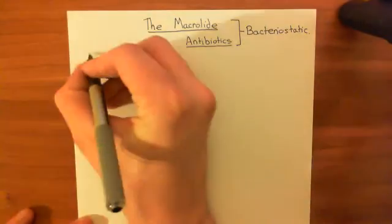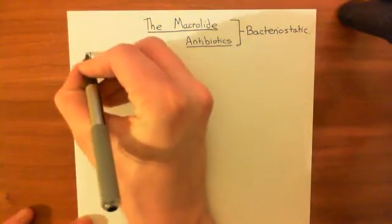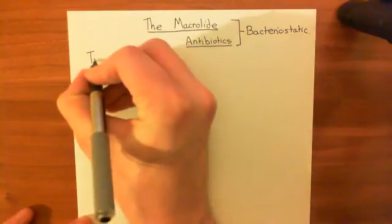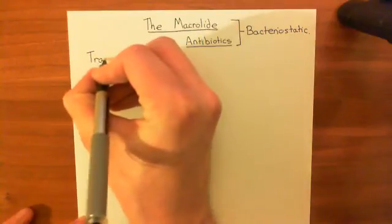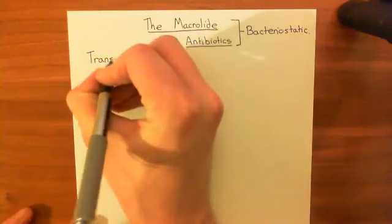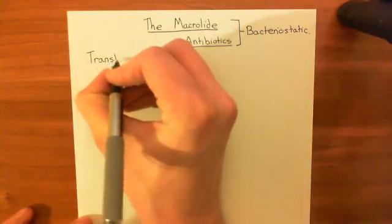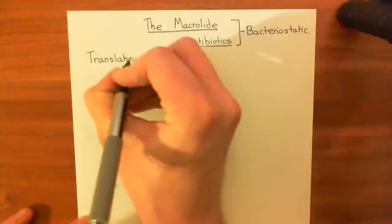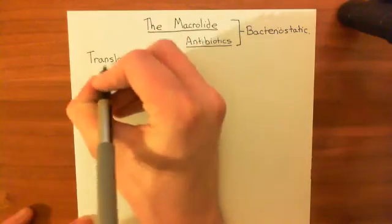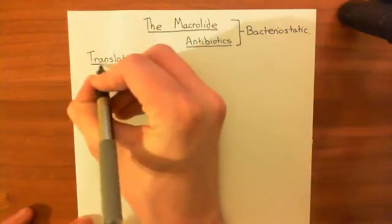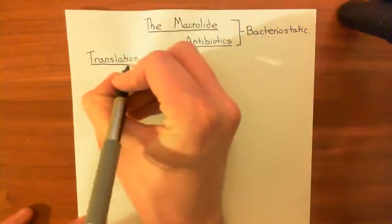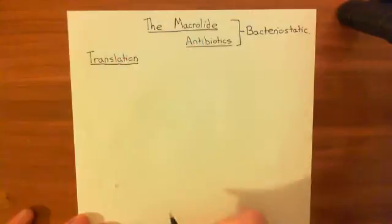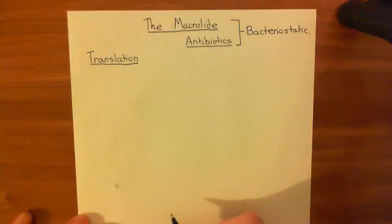So the start of translation — and this is translation within a bacterial cell. The process is very similar in eukaryotic cells; it's just you have slightly different proteins and molecules doing the translation, but the principles overlap.